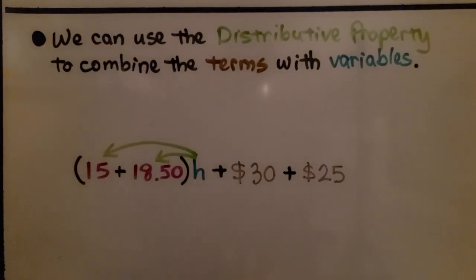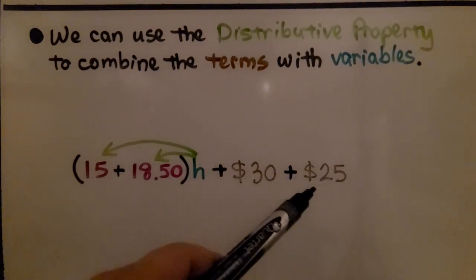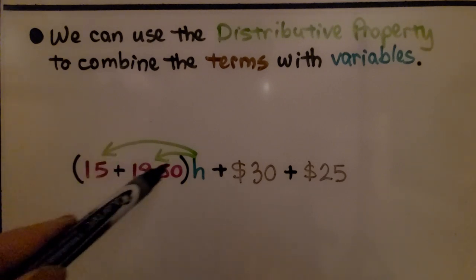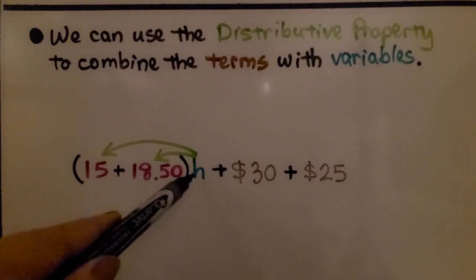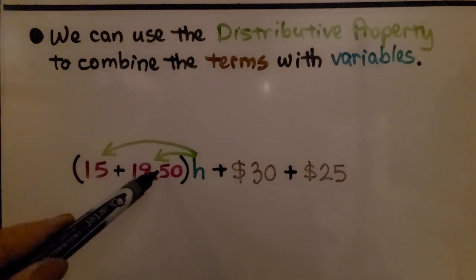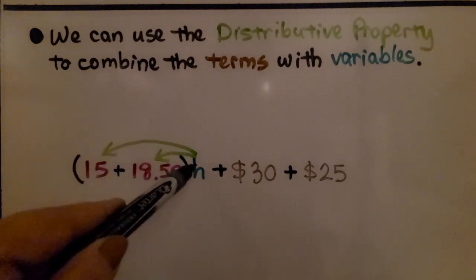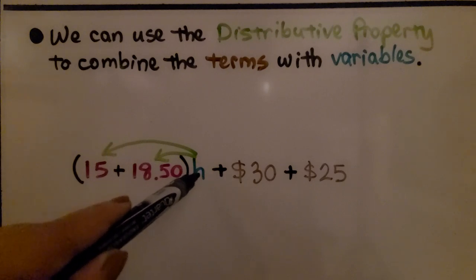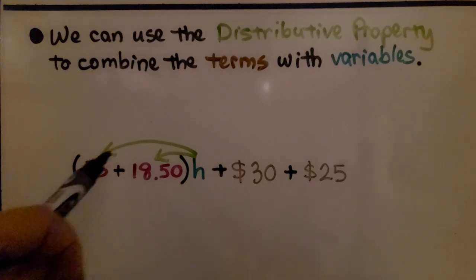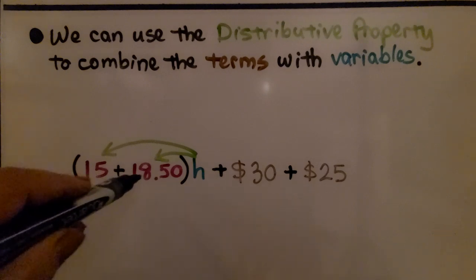We can use the distributive property to combine the terms with variables. If you notice, I didn't combine these. I wrote the terms that had variables together in parentheses multiplied to the variable on the outside. If we had $15h plus $18.50h, we could put the $18.50 and the $15 inside the parentheses, put the h on the outside. And that means we're going to distribute the h to the $15 and to the $18.50. We could just add these and have $33.50h.